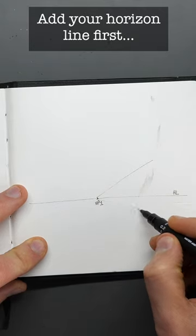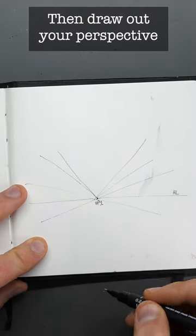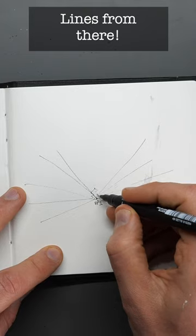First, take a horizon line, now that's at eye level, pop a vanishing point somewhere in the middle of it and draw a load of lines just coming straight out of that.